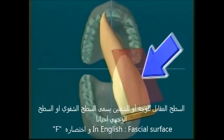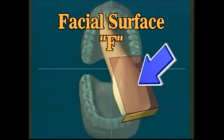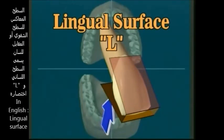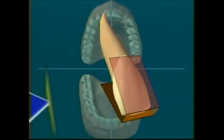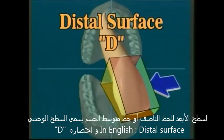The large flat surface facing out toward your face or lips is referred to as facial, sometimes referred to as labial, abbreviated F. The large flat surface directly opposite the labial on the tongue side is referred to as lingual, abbreviated L. The surface nearest the midline or middle of your body is called the mesial, abbreviated M. The surface farthest distance away from the middle of the body is referred to as distal, abbreviated D.